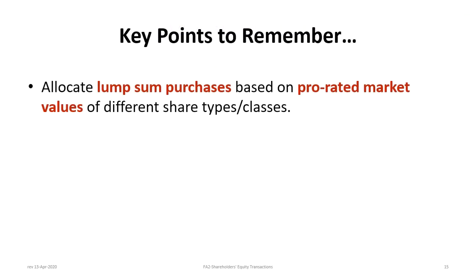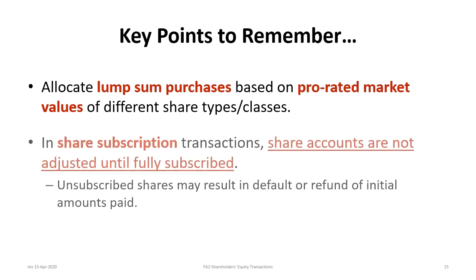Key points to remember: for lump sum purchases, the amount is allocated based on prorated market values of different share classes. For share subscription transactions, share accounts are not adjusted until fully subscribed — a temporary common shares subscribed account is used. Only the subscribed shares are moved from that account into common shares, with the remaining balance either refunded or forfeited.